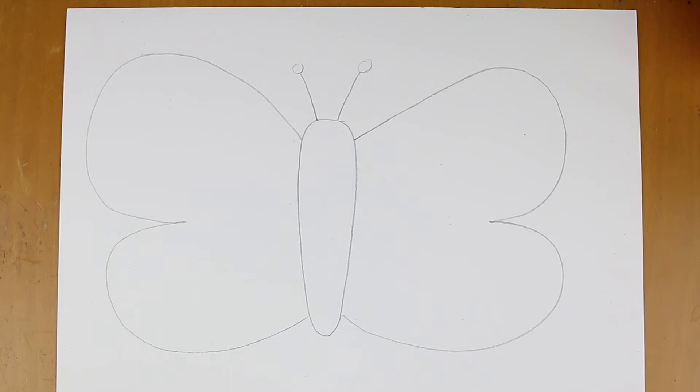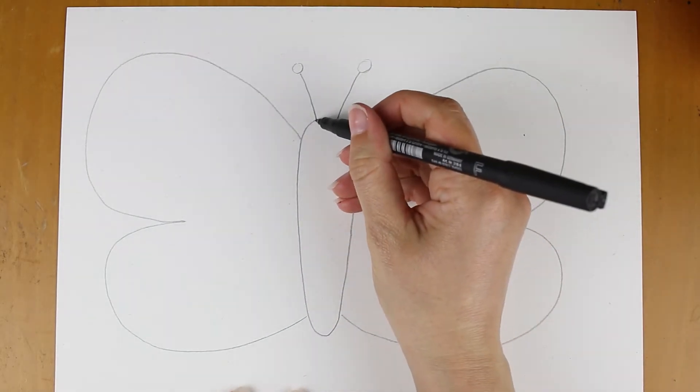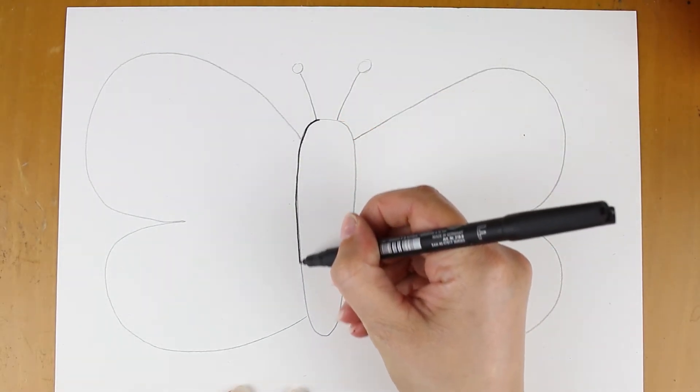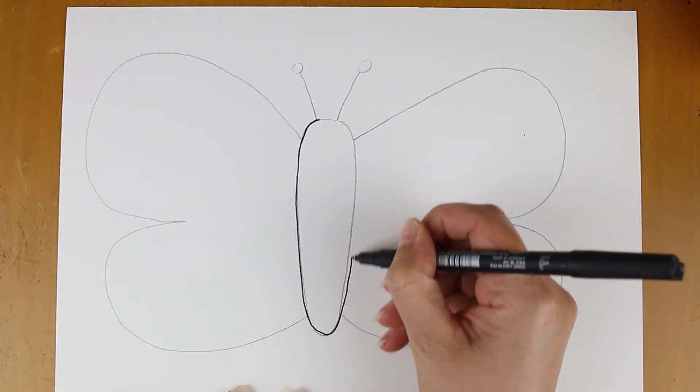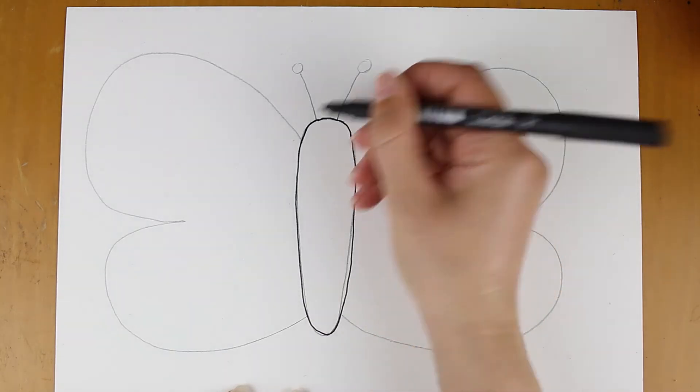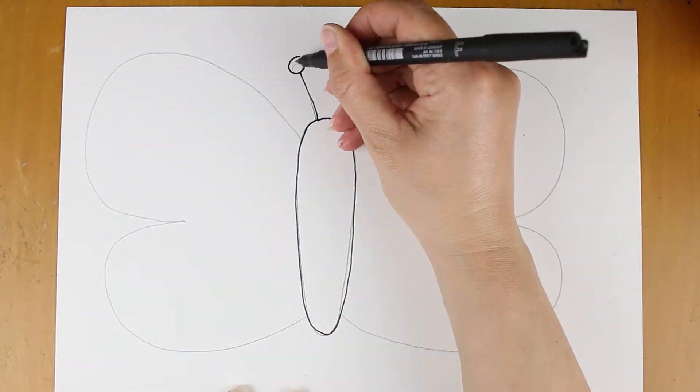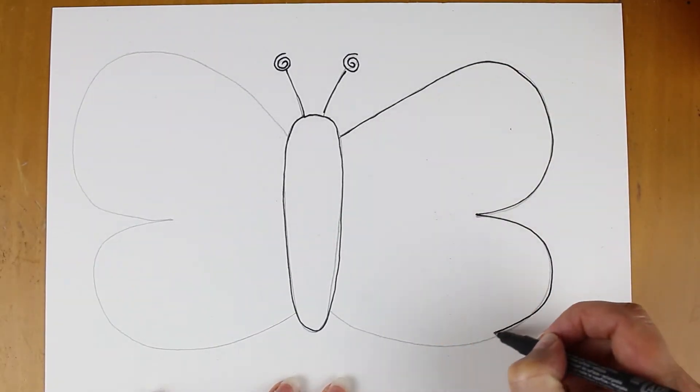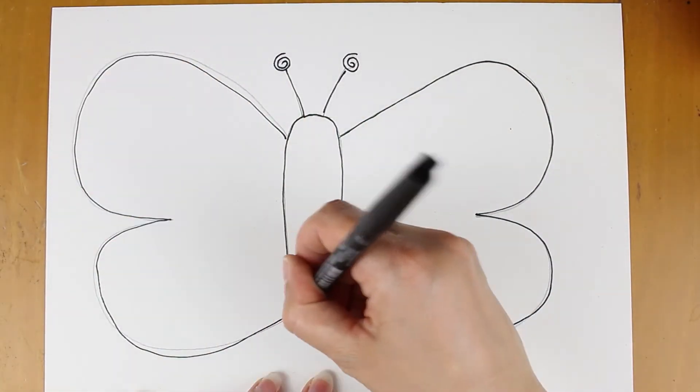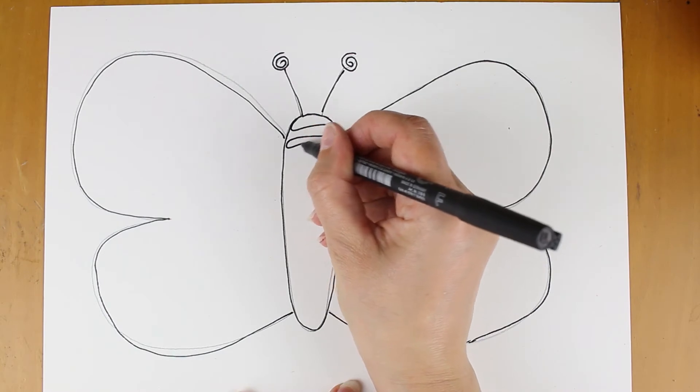Right, now it's my turn. What shall I do with my butterfly? I'm going to start by going over it in pen. I think I'm going to add some patterns to the body now.